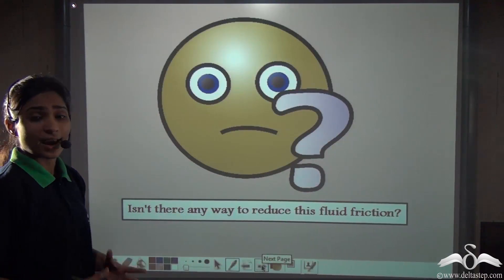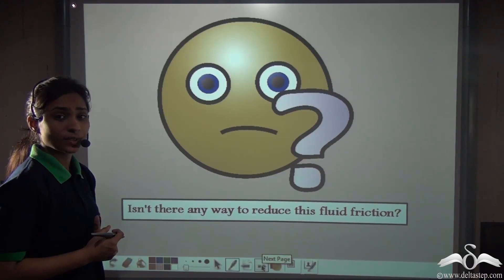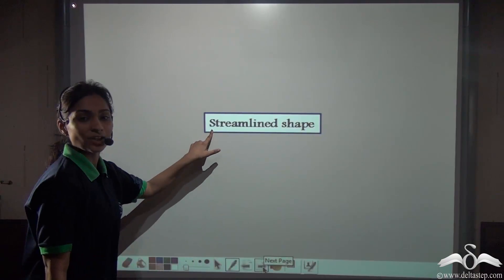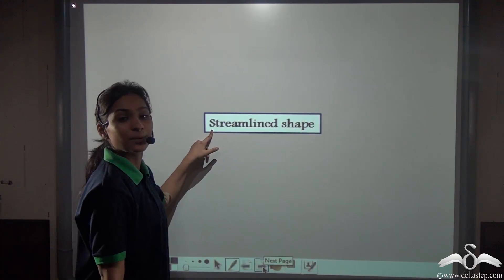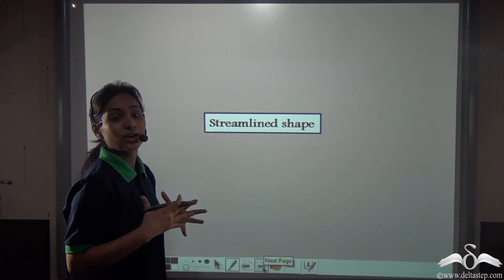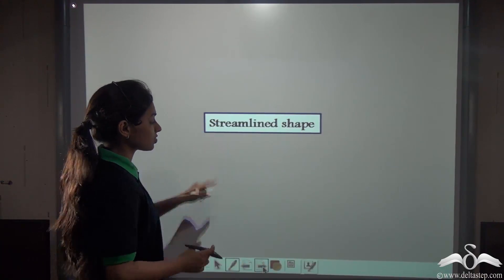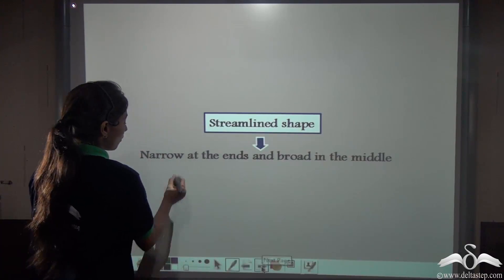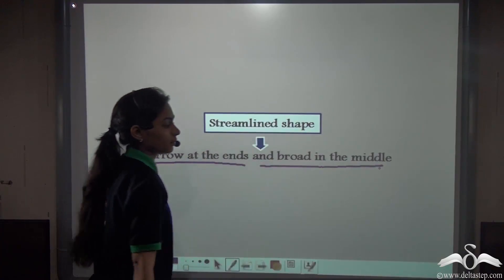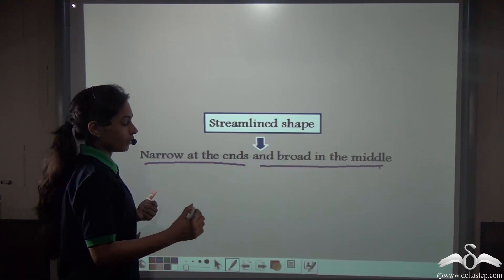Isn't there any way to reduce this fluid friction? Well, there is. We come back to what we call the streamline shape. Making objects in the streamline shape actually reduces this fluid friction. What is this streamline shape? A shape that is narrow at the ends and broad in the middle.